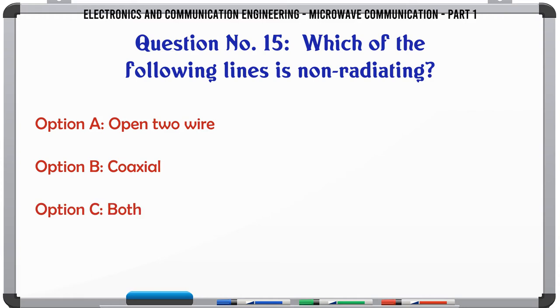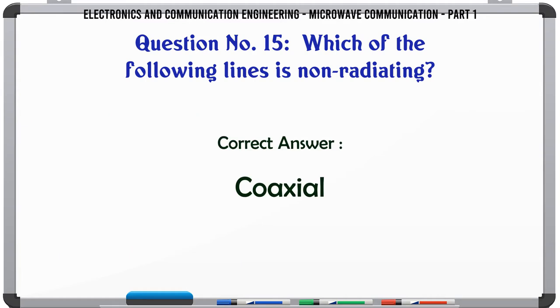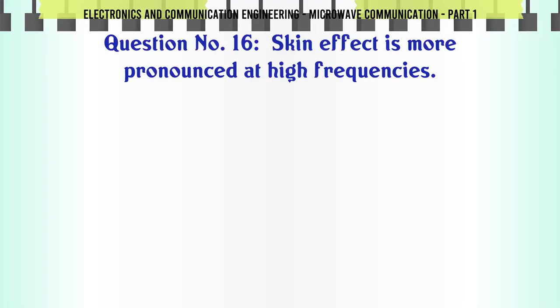Which of the following lines is non-radiating? A. Open to wire, B. Coaxial, C. Both, D. None of the above. The correct answer is Coaxial.